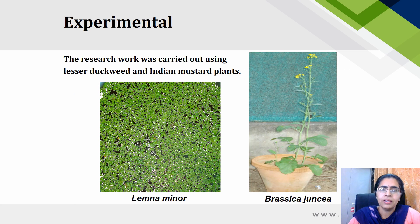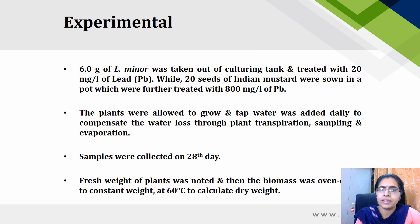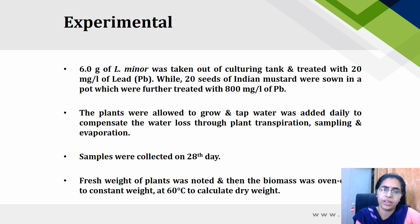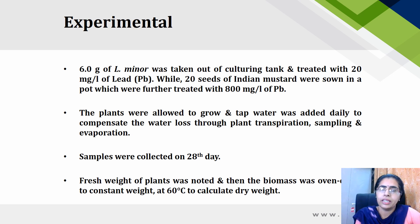Now coming to the experimental section. The research work was carried out using lesser duckweed and Indian mustard plants. 6 grams of Lemna minor was taken from a culturing tank and treated with 20 mg per litre of lead, while 20 seeds of Indian mustard were sown in a pot which were further treated with 800 mg per litre of lead. Both plants were treated with higher concentrations of lead and were allowed to grow, and tap water was added daily to compensate for water loss.